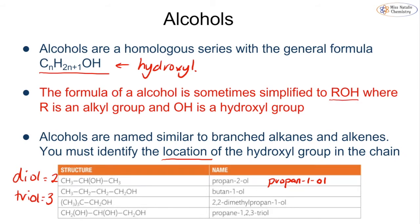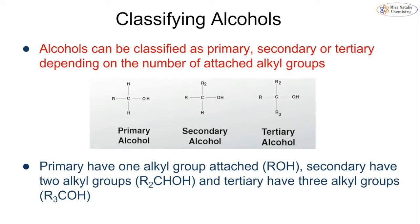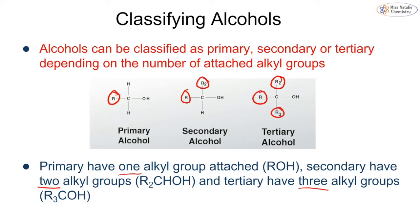We can classify alcohols as primary, secondary or tertiary depending on the number of alkyl groups attached. This is exactly the same way we classify halogenoalkanes. Primary has one alkyl group or one R-group attached, secondary will have two R-groups attached, and tertiary will have three R-groups attached to the carbon that contains the OH. It is very important that we can classify all of our alcohols because they react in very different ways.